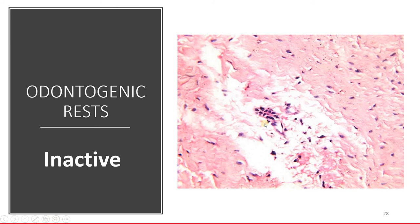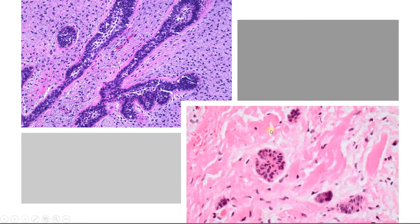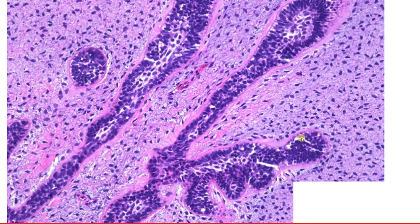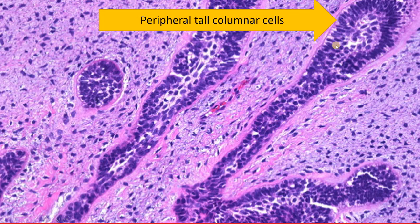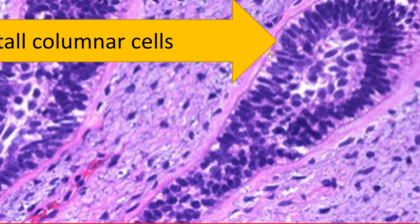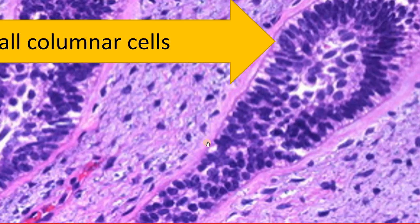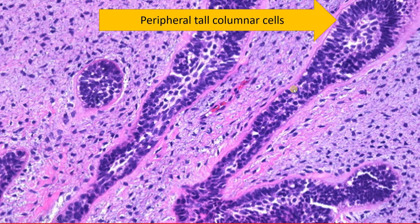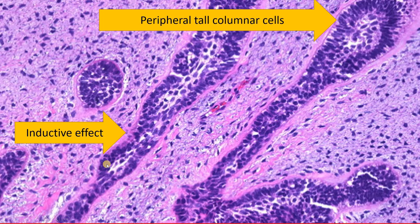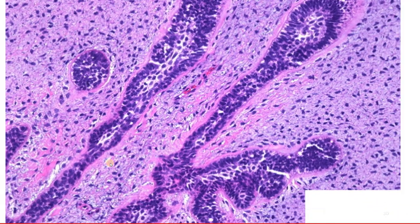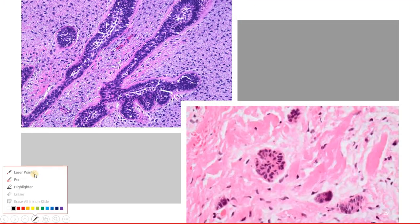You need to understand the difference between inactive and active odontogenic cells. Active odontogenic cells are tall columnar cells that stimulate the connective tissue to form eosinophilic material and show vacuolation within the cells. This eosinophilic material is formed by an inductive effect due to epithelial-mesenchymal interaction. In a dentigerous cyst, you do not see this kind of active cell rest — the cells remain inactive.